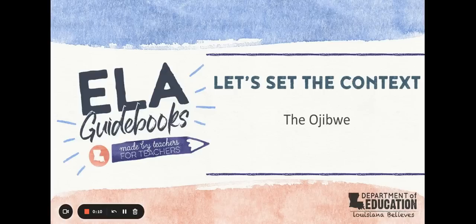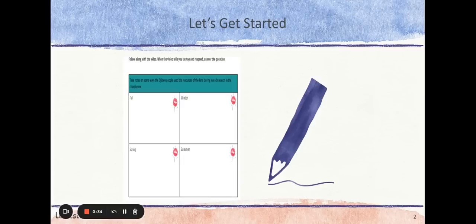You are about to engage in the ELA guidebooks unit, The Birchbark House. The purpose of this video is to help you better understand the life and culture of the Ojibwe, a Native American tribe living in North America long before Europeans began to settle here. This information will help you better understand the text in this unit and their connections to the Native American people and their culture.